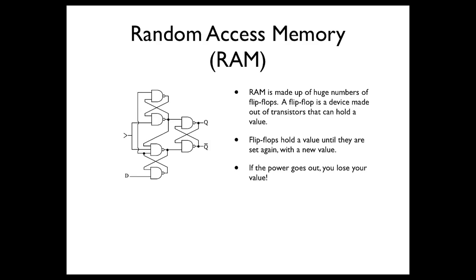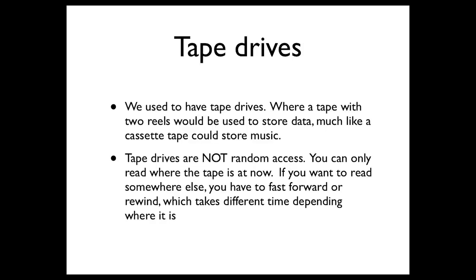This is where tape drives came in. Tape drives are like a cassette tape — the data is stored on the tape and you read it sequentially. But tape drives are not random access: you can only read where the tape currently is, and otherwise you have to fast-forward or rewind to find the spot you want. That seek time varies depending on where you are and where you want to go, making it much more complicated than RAM. You also want data stored together so you don't have to jump back and forth.